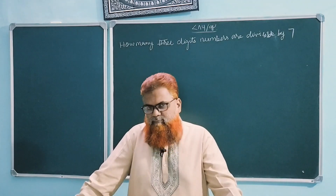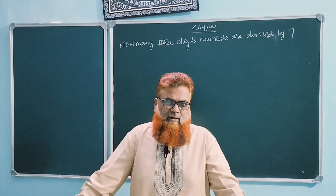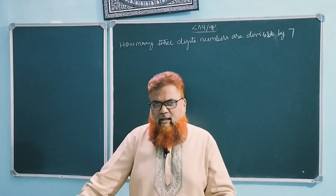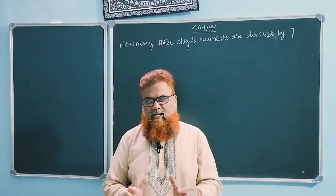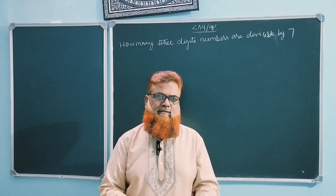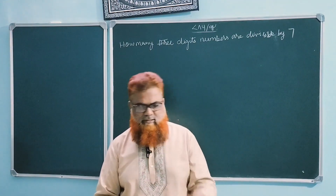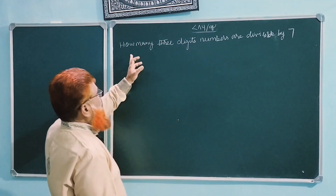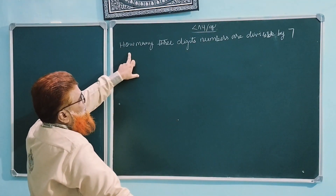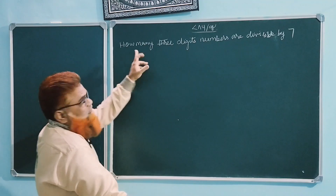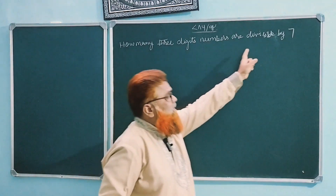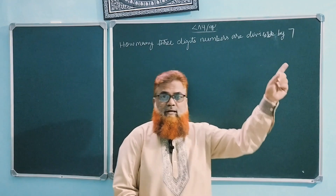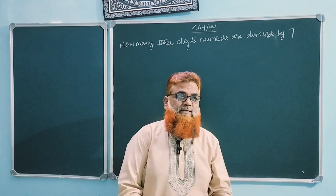Today I am going to solve very few problems which have some technicality and skill in solving arithmetic progression. Now coming to this problem without any further delay, here is a question: how many 3-digit numbers are divisible by 7?